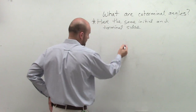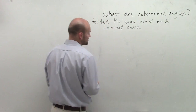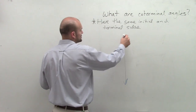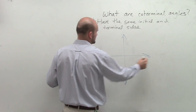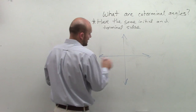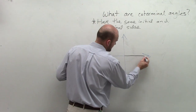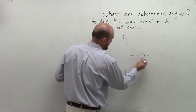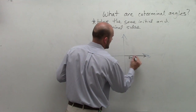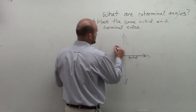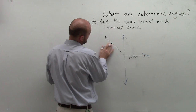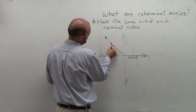Let's remember what exactly initial and terminal sides are. I'm going to use standard form of an angle and draw a Cartesian coordinate system. Our initial side is always going to lie on our x-axis, and then we place our terminal side — so that's going to be your terminal side.